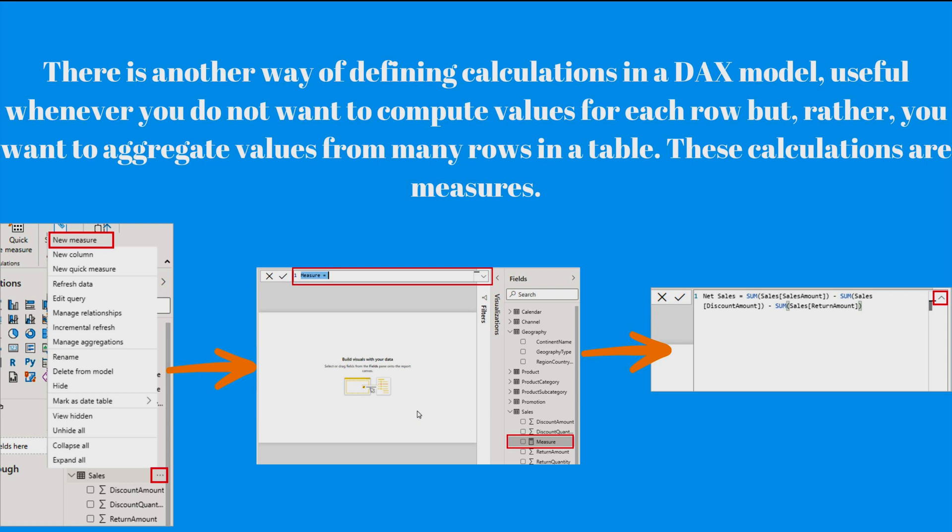In the calculated column, its context is always row by row. However, when you need to perform any kind of aggregations, then you have to use the measures. Now we are going to discuss some of the differences between these two.